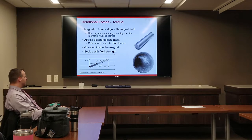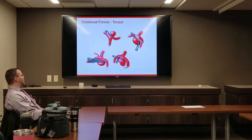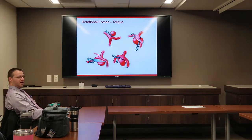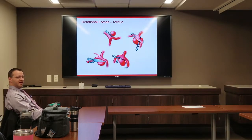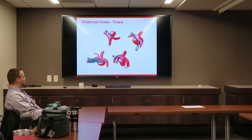Torque does scale with field strength, so at 3T it's going to be stronger than at 1.5T. A common consideration is aneurysm clips — even though clips are small, if they're slightly ferromagnetic, they could twist to align with the field, which could actually sever the aneurysm vessel. This is one reason you want to screen for these materials very closely.